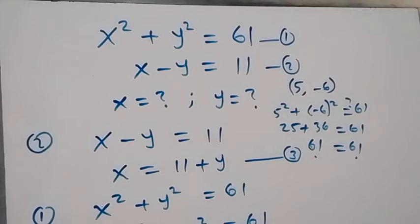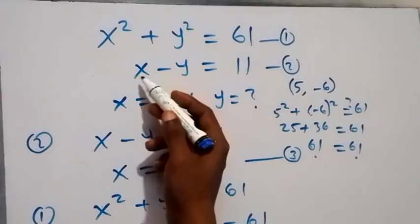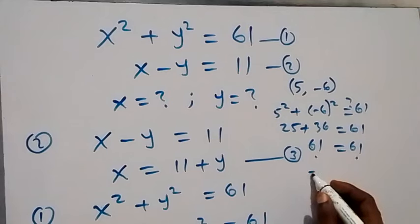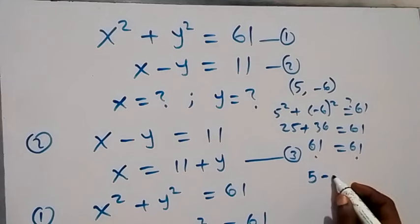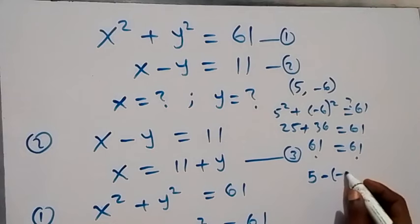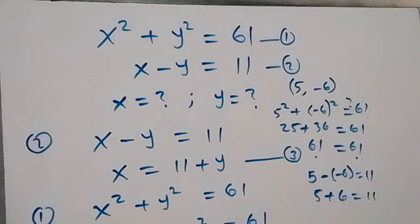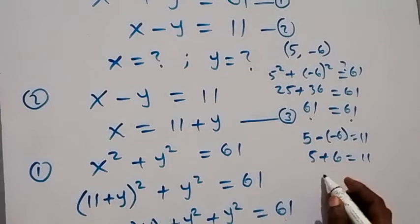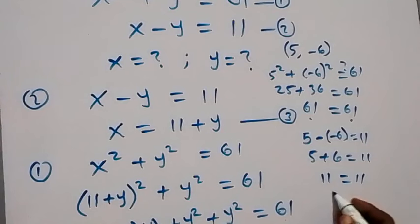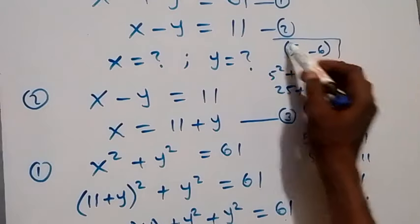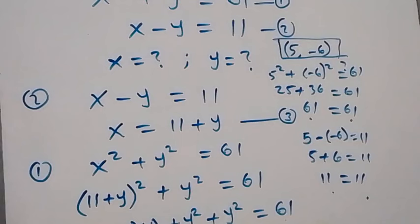Putting it into equation two: x minus y equals 5 minus (minus 6), which is 5 plus 6, equals 11. Left hand side equals right hand side. So the first solution satisfies the given problem. When we test the second solution, we discover it also satisfies the given equations.